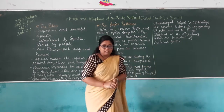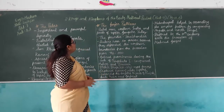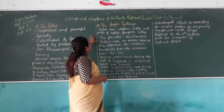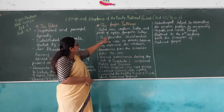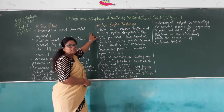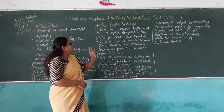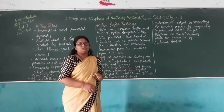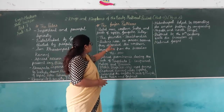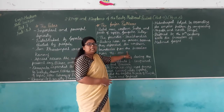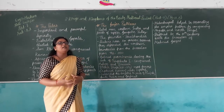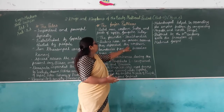Now we have the Gurjara Pratiharas. The Gurjara Pratiharas ruled over Western India and parts of the upper Gangetic valley. The founder of this dynasty was Harichandra. The rulers rose to power because they defended the northern boundaries from invasions between 712 and 1000 CE.